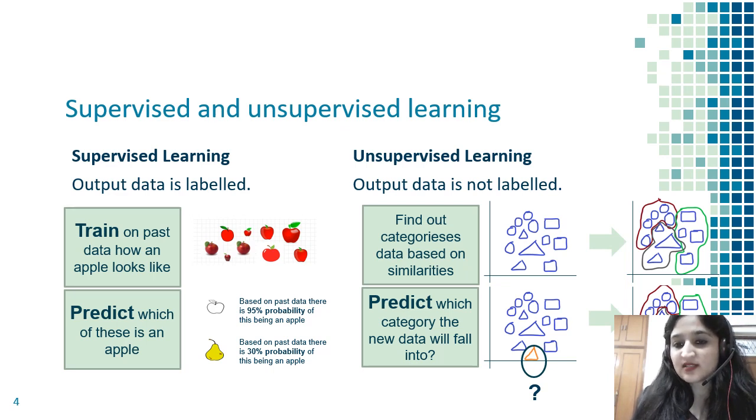It has already made three clusters based on past data. It will compare this new yellow triangle and see which cluster is closest to this new data point. It will see the gray cluster with lots of triangles is where this triangle should fit, so it will predict it belongs to the gray cluster. This is an example of unsupervised learning.